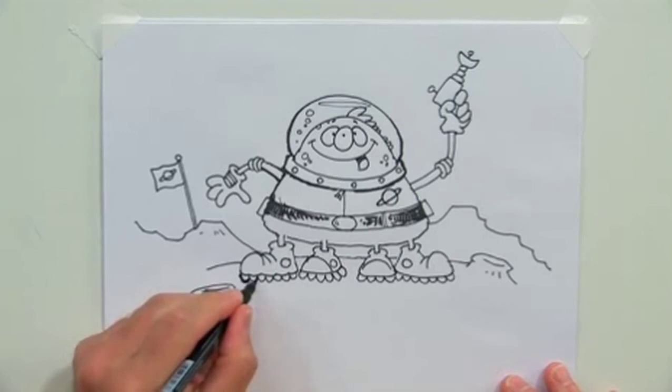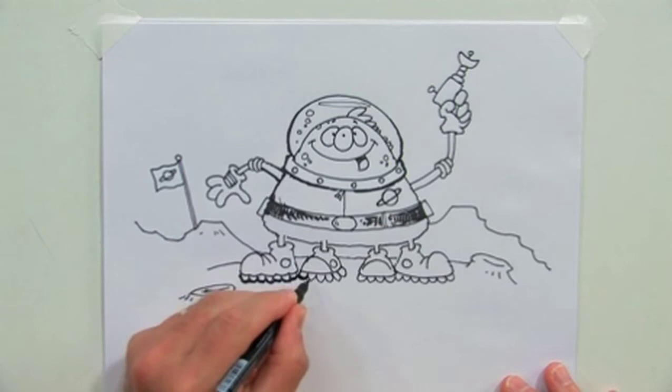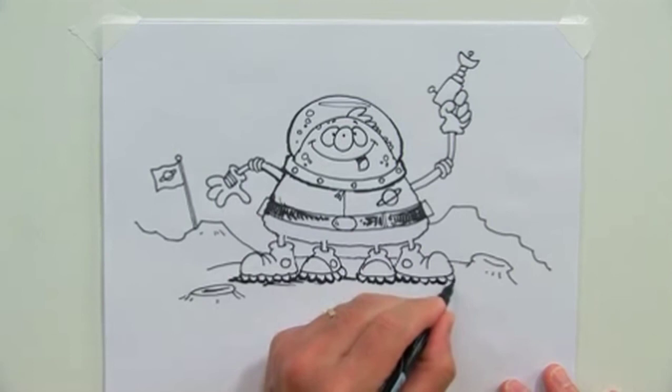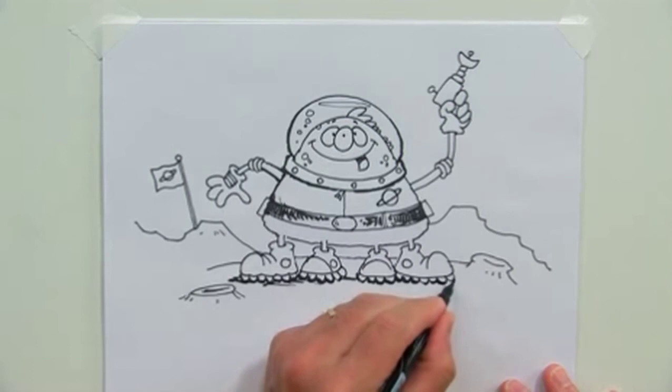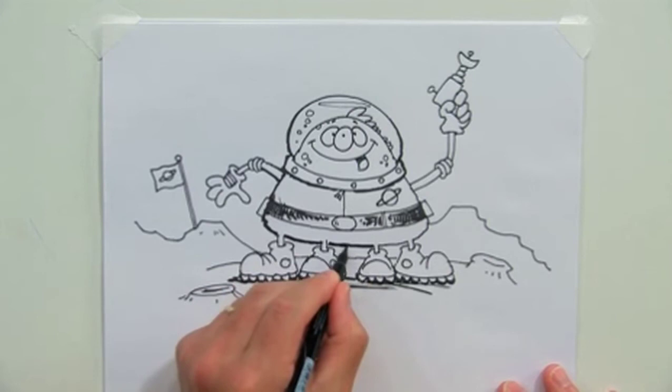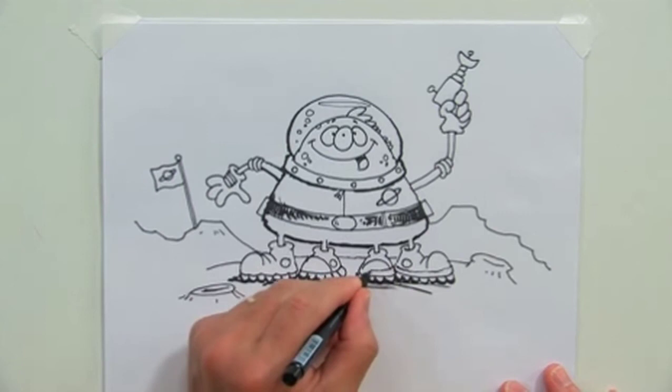Let's get some more line weight underneath here. Make him look like he's actually standing on the moon there or on a planet. A little bit of shadow under there. That's looking good. Well he sure does have a lot of treads on his shoes, huh? That looks pretty good. And let's add a little bit of line weight underneath here. You guys still with me? We'll add a little bit more fun to his shoes here. That's looking pretty good.